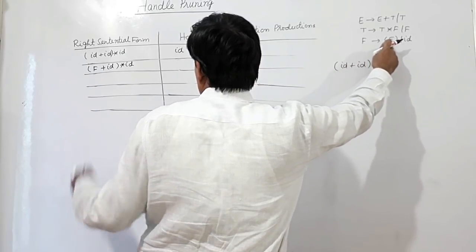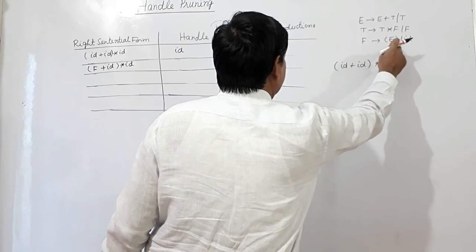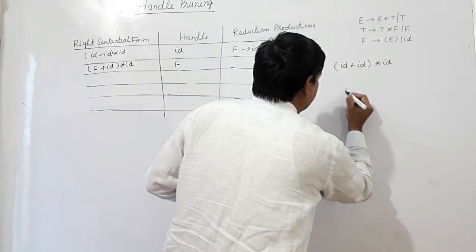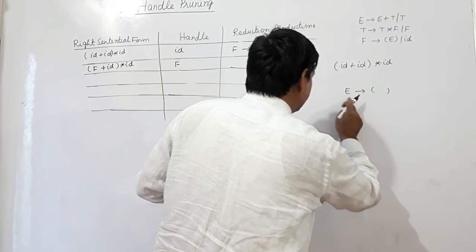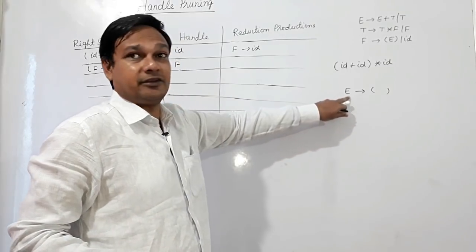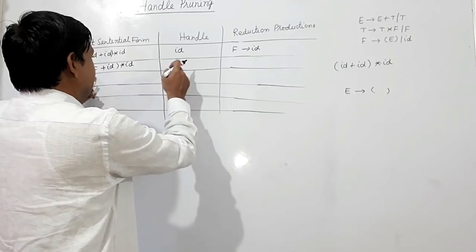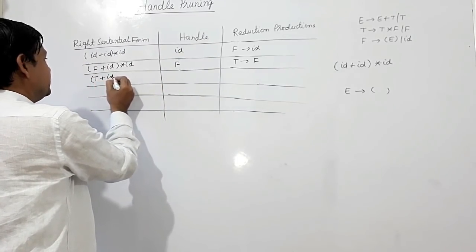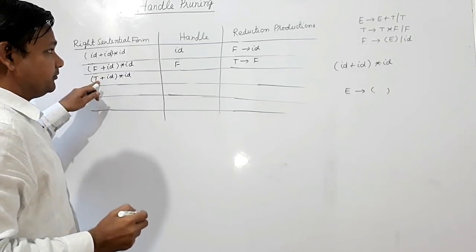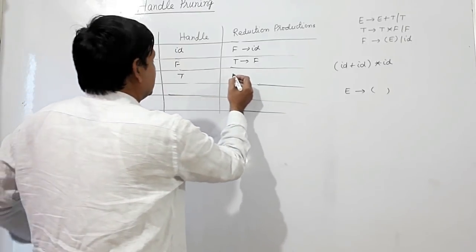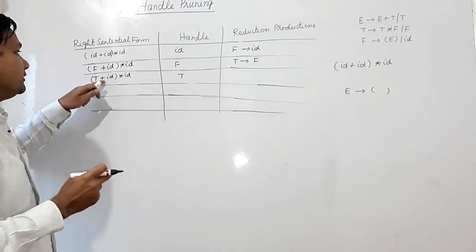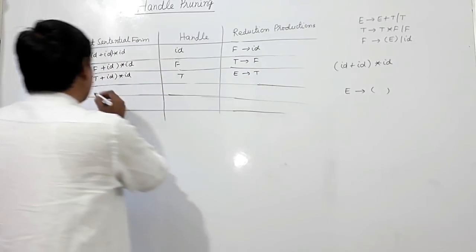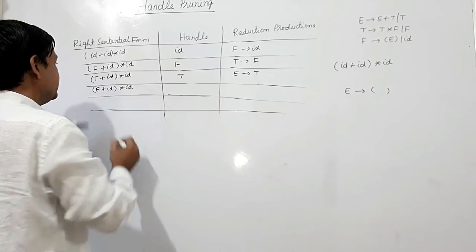Now we have to reach the form E plus T inside the bracket. So F should be the handle here and F can be reduced to T. So T produces from F here, giving T plus id, close bracket star id. Now this T should be the handle because we need E plus T with the plus sign present. So T can be reduced to E, giving E plus id, close bracket star id.